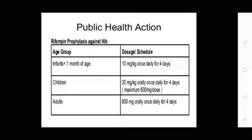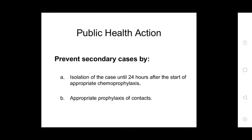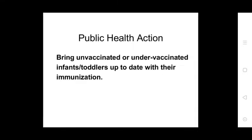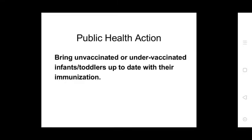Rifampin dosage: infants less than one month — 10 mg/kg daily for four days; children weighing less than 20 kg — 20 mg/kg orally daily for four days; adults — 600 mg orally daily for four days. Prevent secondary cases by isolation for 24 hours after start of chemoprophylaxis and ensure unvaccinated or under-vaccinated infant contacts are brought up to date on their immunizations. This completes the topic on Haemophilus influenzae (Hib).